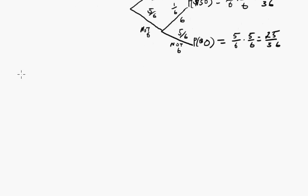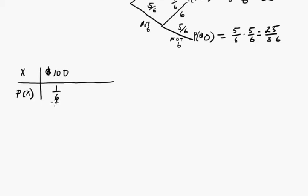So then if x is the amount that you win, the random variable, the amount that you win, then we could do a probability model. So we're going to win $100. That's 1/6.